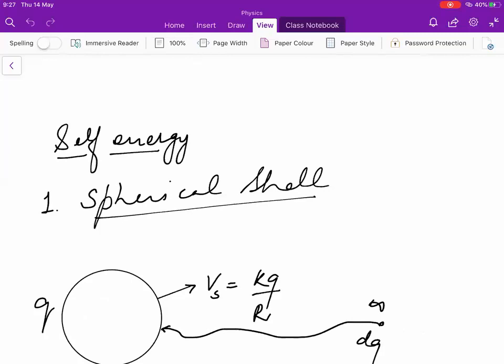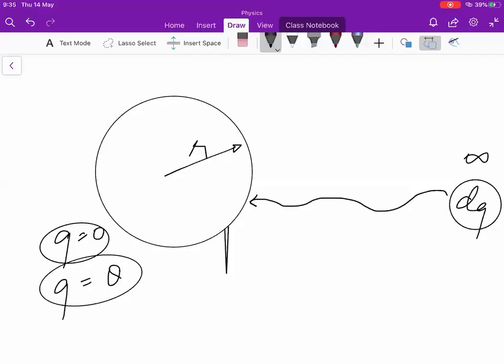If there is a charge which is distributed in space, the charge Q is already built.